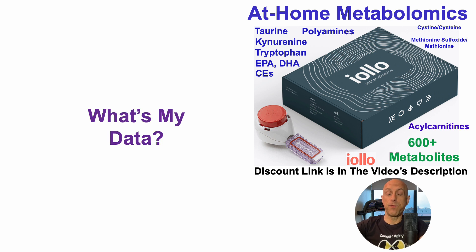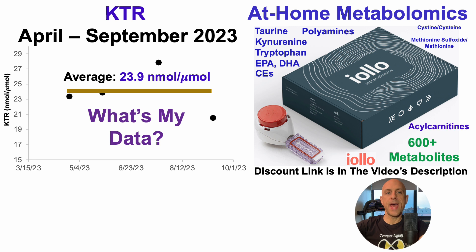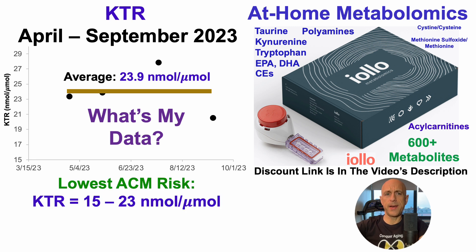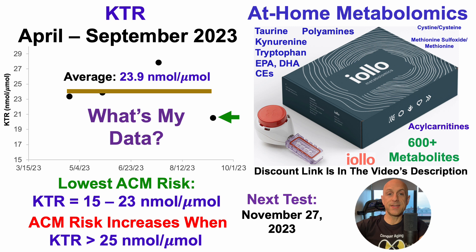My four tests run from April to September 2023, and my average KTR over those four tests is 24 nanomoles per micromolar. Lowest all-cause mortality risk was when the KTR was 15 to 23, so I'm just outside of that range. The good news is that risk significantly increases above 25, so it's not great but not terrible. My most recent test came in at 21, and the next test is scheduled for the end of this month. Once I reach five results, I'll start looking at correlations with diet and supplements, with the goal of keeping it close to 21 or lower.